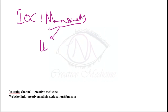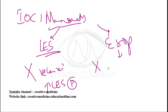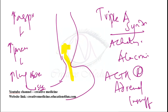On manometry in achalasia: absence of LES relaxation, increased LES pressure, absent peristalsis in the esophageal body, ineffective contractions, and increased esophageal pressure. On barium swallow, bird beak appearance (also called pencil tip or rat tail appearance) is seen.